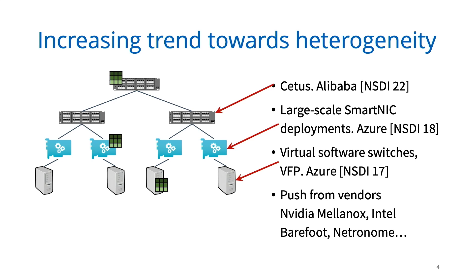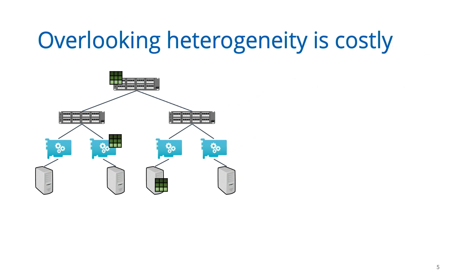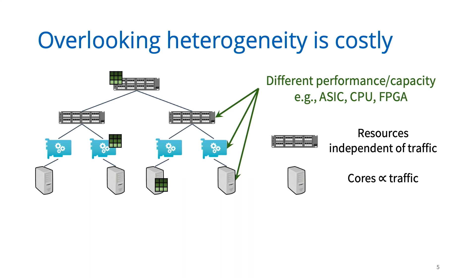Overlooking all of this heterogeneity comes at a great cost. These different devices might have drastically different memory hierarchies and computer architectures, some might have specialized ASICs for certain operations, others might have general-purpose compute. And so the same program can perform very differently on these devices. For instance, on a programmable switch, the required resources might be independent of the traffic that you want to monitor, whereas on a server CPU, the amount of resources required might depend on the amount of traffic.